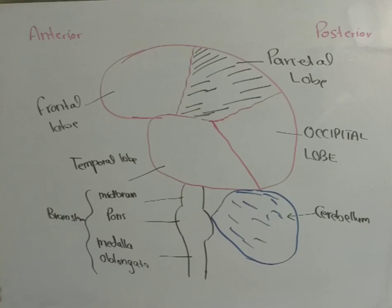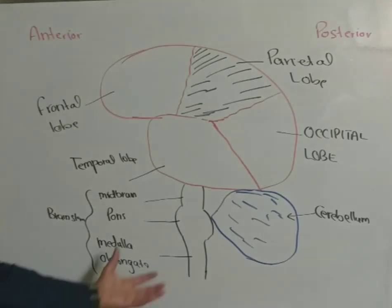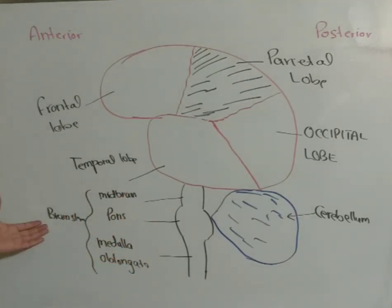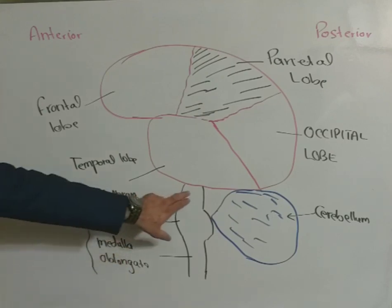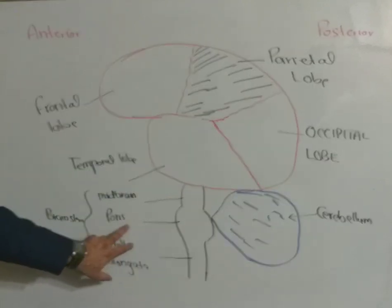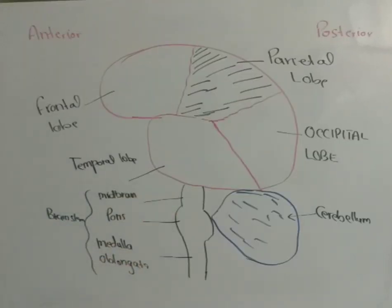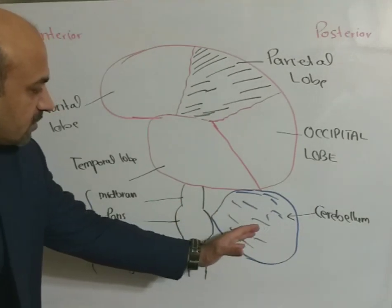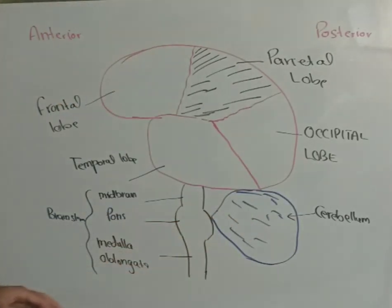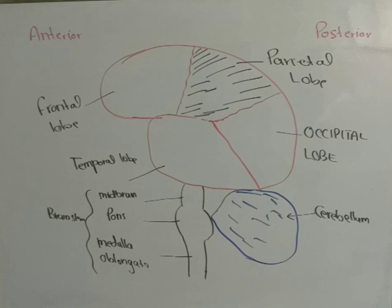The forebrain is positioned on a base or stem known as the brain stem, which comprises three parts: the midbrain, right underneath the occipital lobes; then the pons; and finally, on the lowermost part, the medulla oblongata. These three collectively make up the brain stem. Posterior to the brain stem we have the cerebellum — it is the hindbrain, the primitive brain. So we have the forebrain, the midbrain region, and the hindbrain which is the cerebellum.